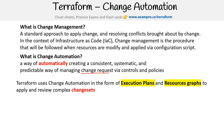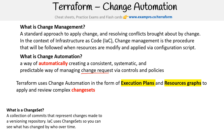Terraform uses change automation in the form of execution plans and resource graphs, which we will look at in detail in upcoming slides, and apply to review complex change sets. A change set is a collection of commits that represents changes made to a versioning repository. For IAC, change sets let you see what has changed, by who, and over time. When I say versioning repository, that doesn't necessarily mean Git.